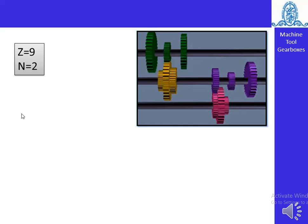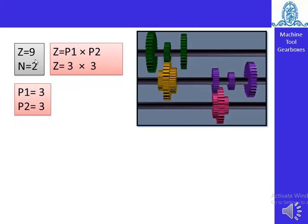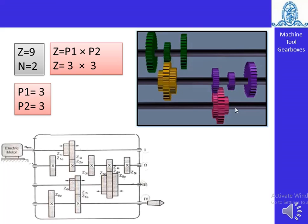When Z equals nine and N equals two, there are three shafts: input shaft, intermediate shaft, and output shaft. Now Z must be split as P1 × P2 = 3 × 3 = 9, so P1 equals three and P2 equals three. In the diagram, the yellow portion shows a three-gear cluster for P1, and the pink portion shows another three-gear cluster for P2. The layout of this gearbox will be drawn using this diagram.